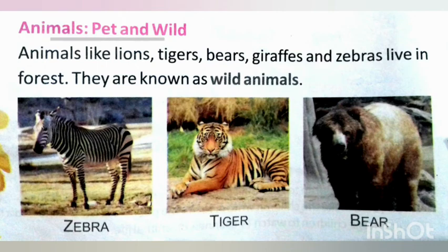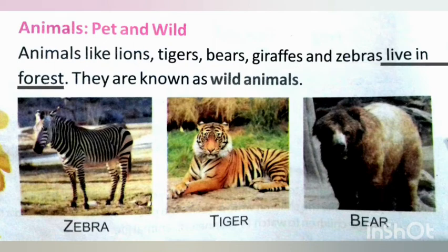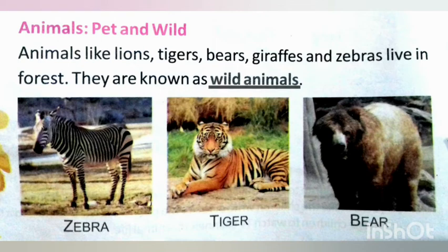Animals — pet and wild. Animals like lions, tigers, bears and zebras live in forests. They are known as wild animals. Here we have three pictures: zebra, tiger, bear. These are wild animals.